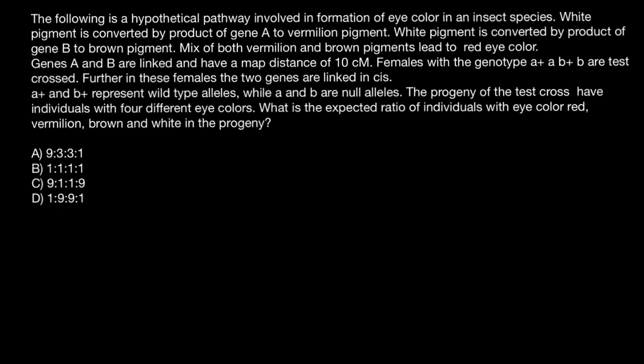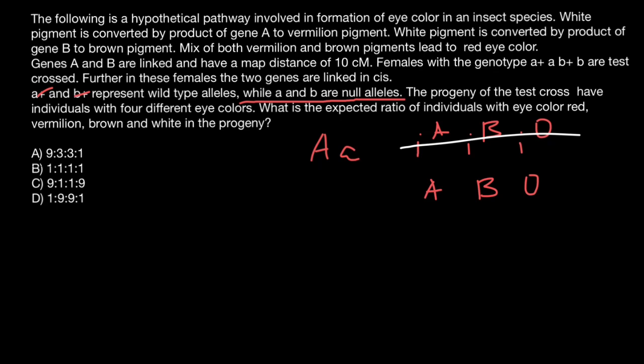Before you start solving this problem, I encourage you to get rid of the A-plus and B-plus notation and instead use capital A and small a — dominant normal allele and recessive defective allele, which is why we also call them null alleles. For example, in the ABO blood group system you don't have to use I-A, I-B, and I-O; you can just write allele A, allele B, and allele O. Much less cluttered — get rid of any clutter whenever you can.